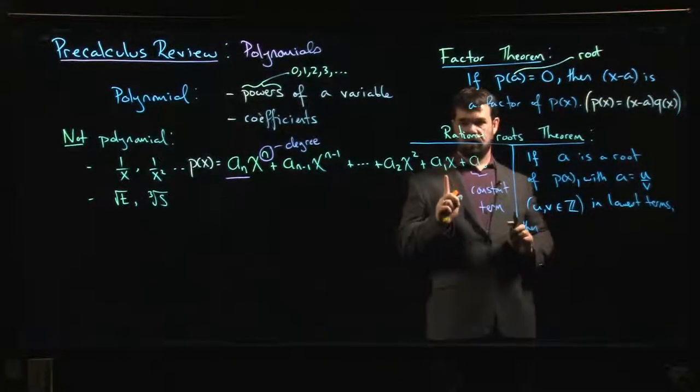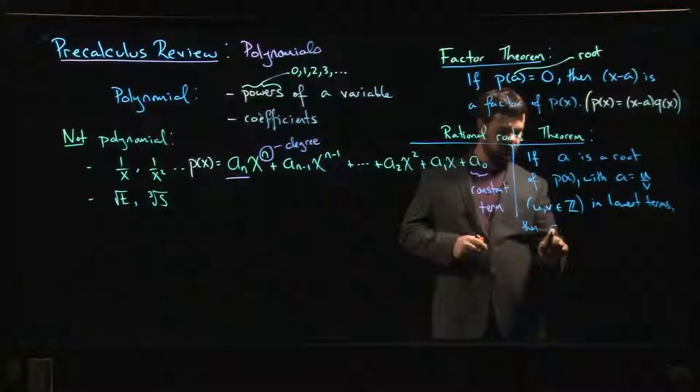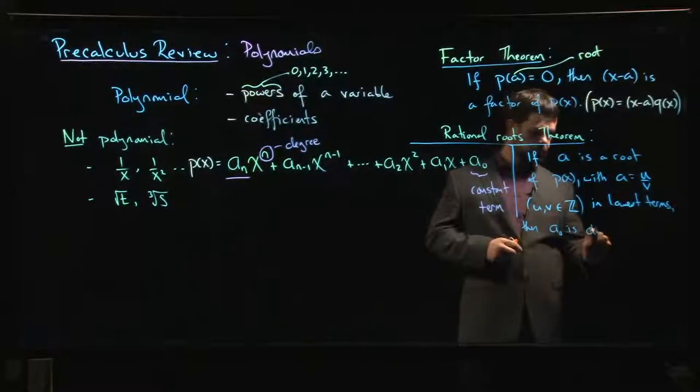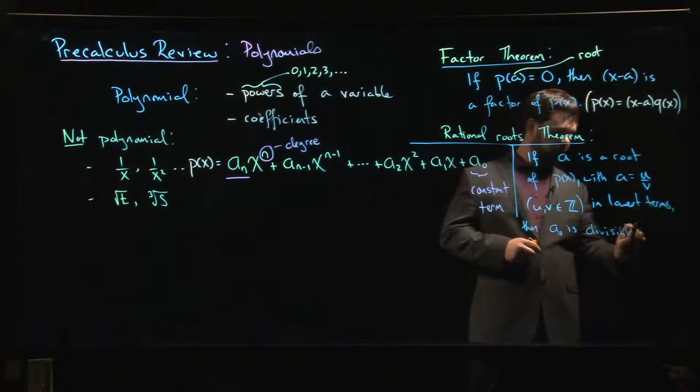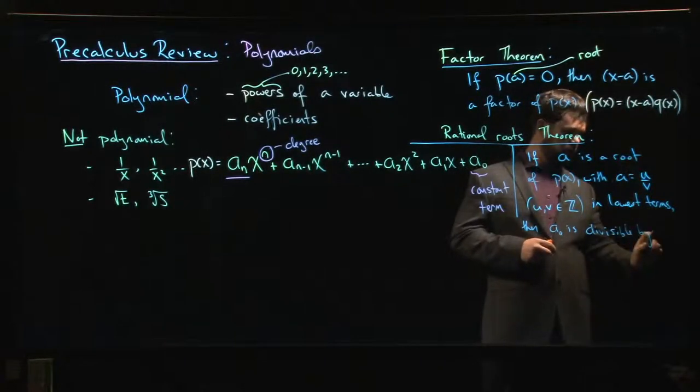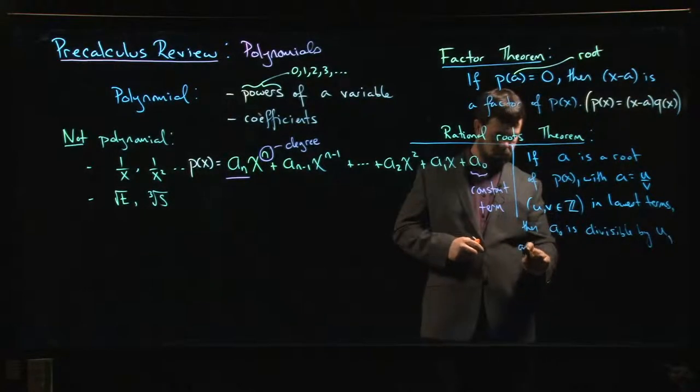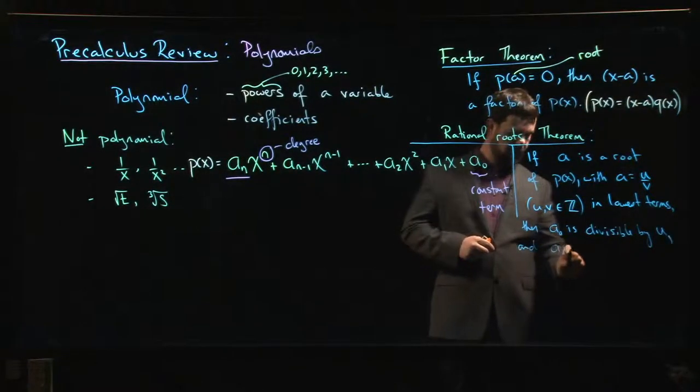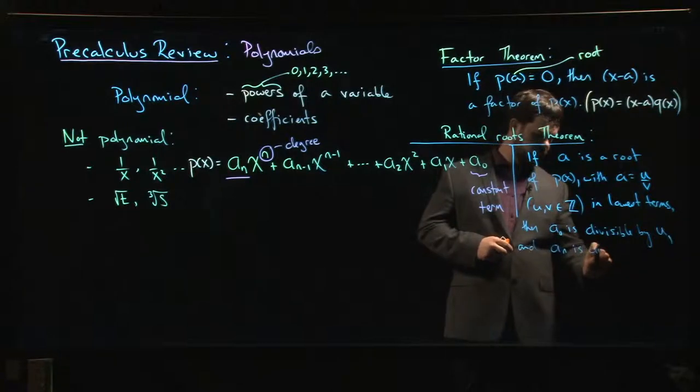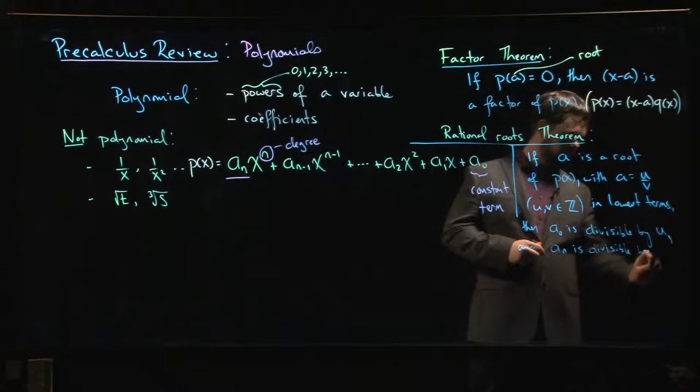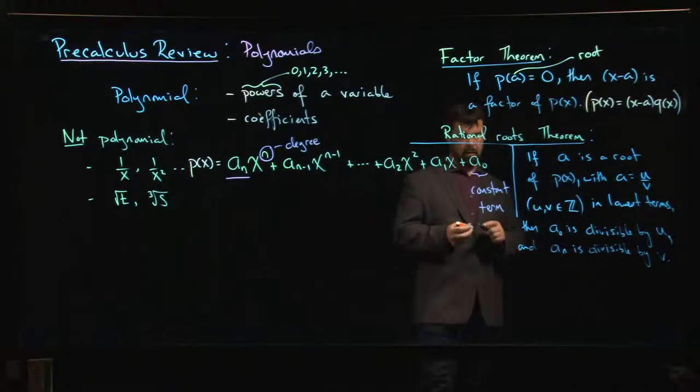You can say that a_0, the constant term, is divisible by u, and a_n, the leading coefficient, is divisible by v. That's one way to say it. Maybe there are nicer ways of saying it, but this is one way.